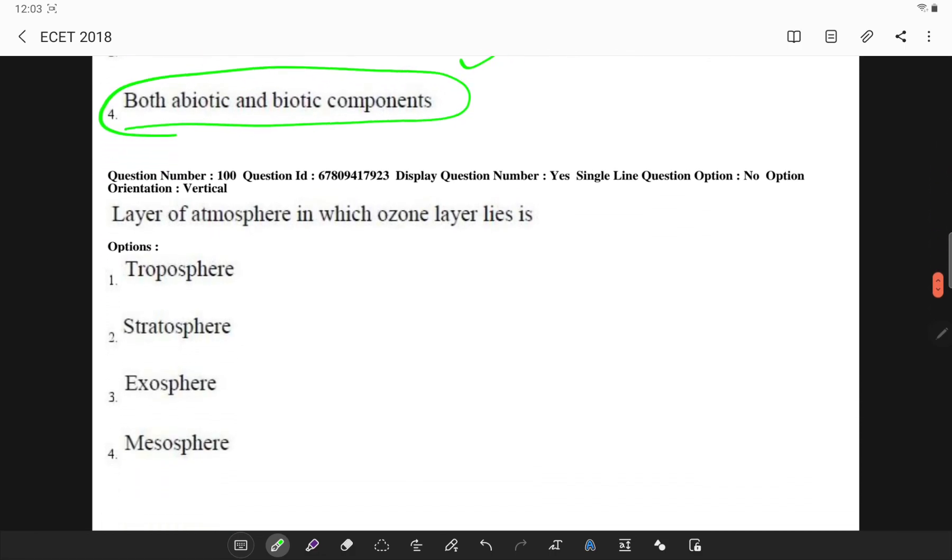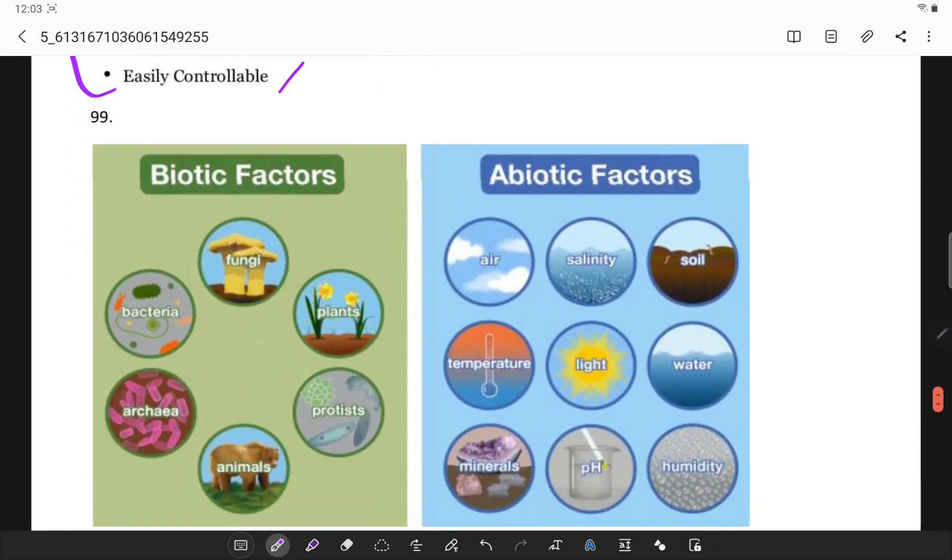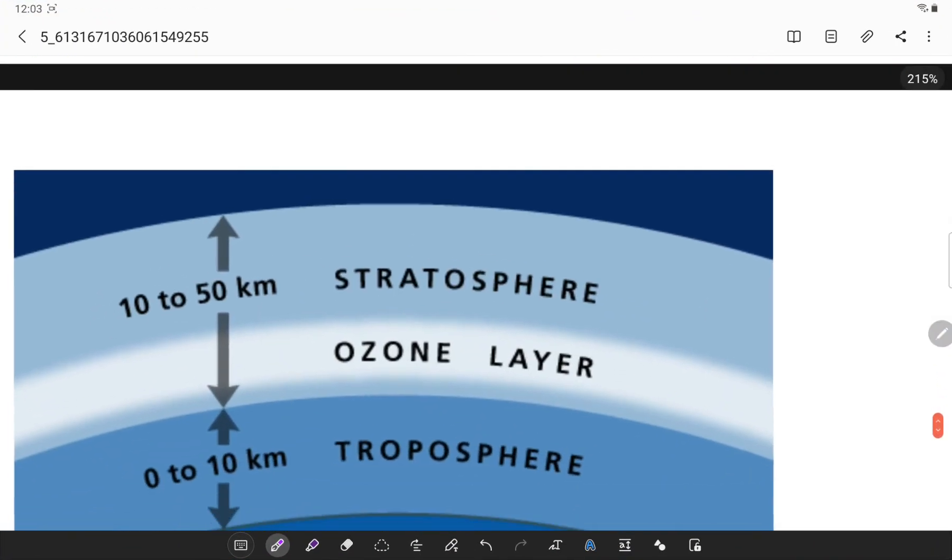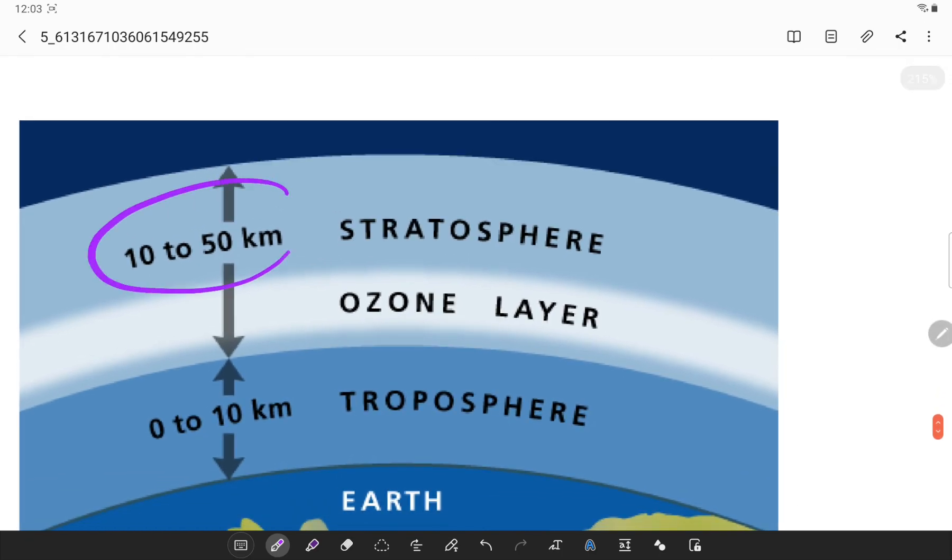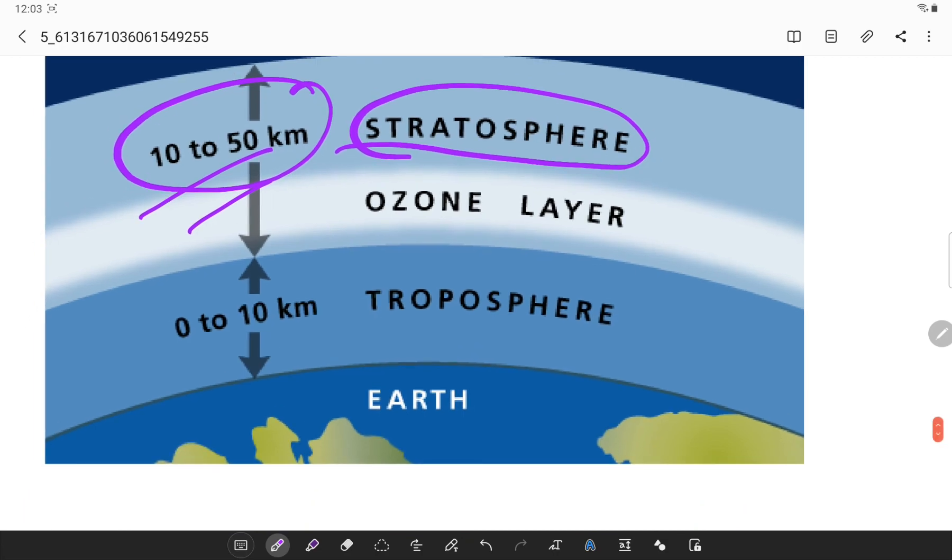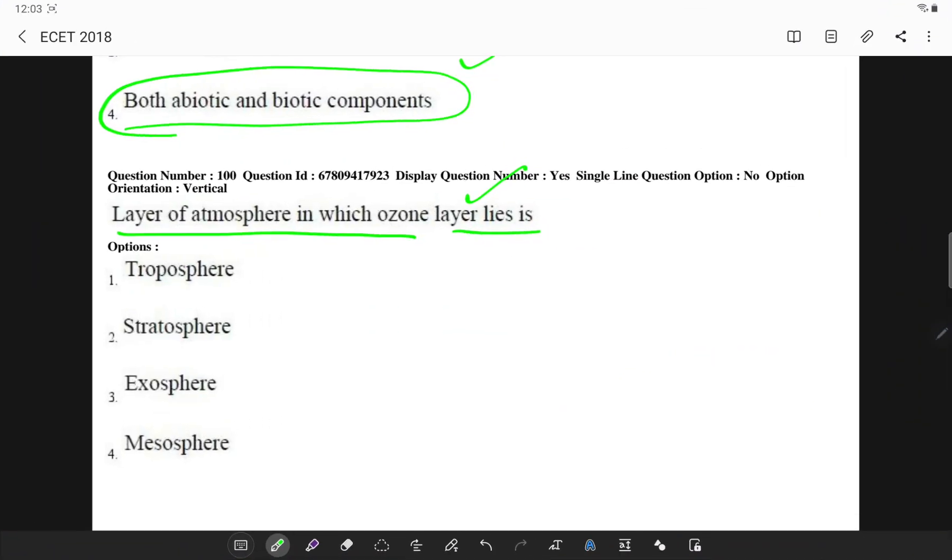Layer of ozone, this is also asked in the last question, at what kilometers also I have clearly shown you. So ozone basically is in stratosphere at 10 to 50 kilometers from earth. So it is stratosphere.